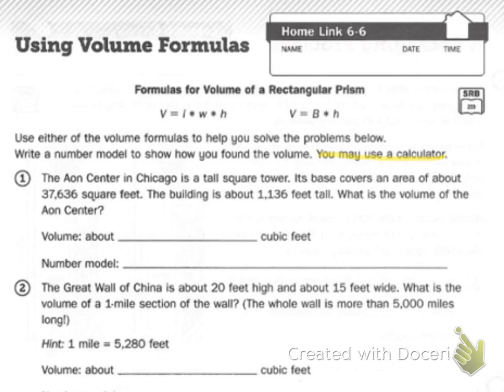Now, the Ion Center in Chicago is a tall square tower. Its base, so I already know I'm going to use this formula because I have a base, covers an area of about 37,636 square feet. The building is about 1,136 feet tall.